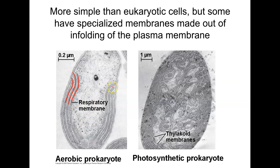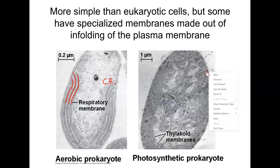The respiratory membranes carry out something like cellular respiration — something that in eukaryotic cells is carried out inside the mitochondria. In bacteria, it's carried out by respiratory membranes, which are parts of the cell membrane that have enfolded inside the cell. The same is true for photosynthesis: bacteria have thylakoid membranes, which are enfolded parts of the plasma membrane, rather than chloroplasts.